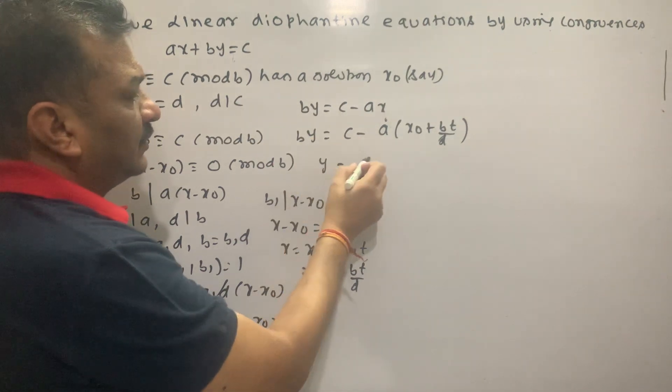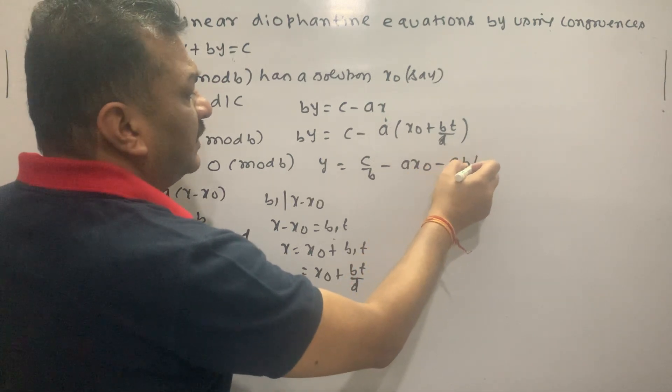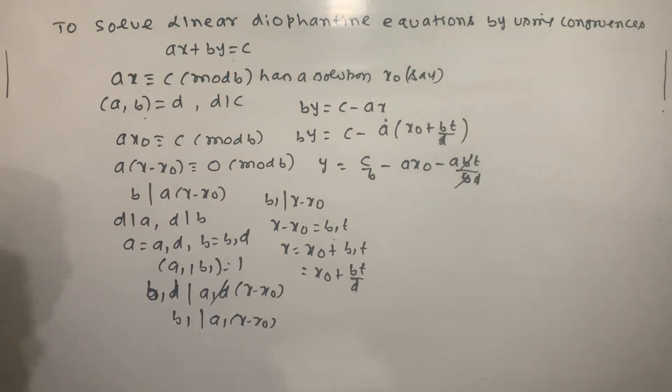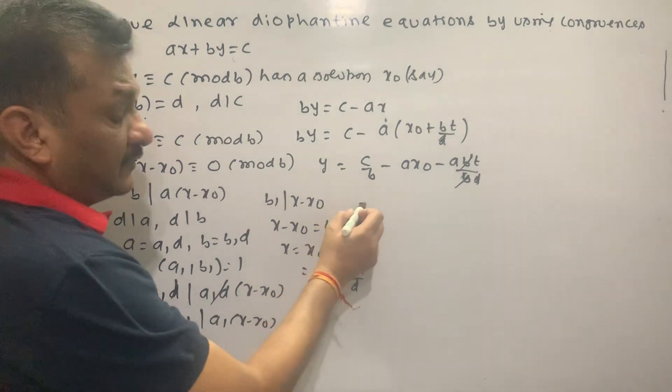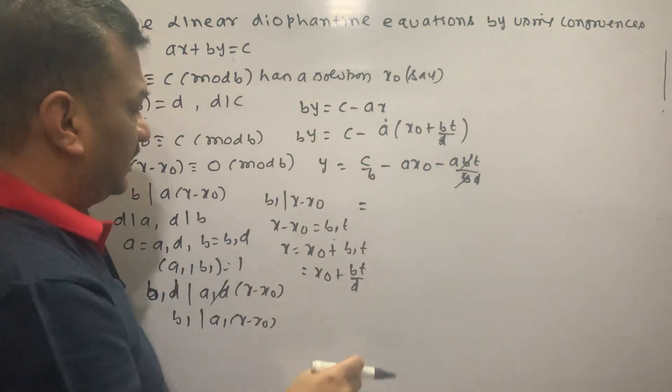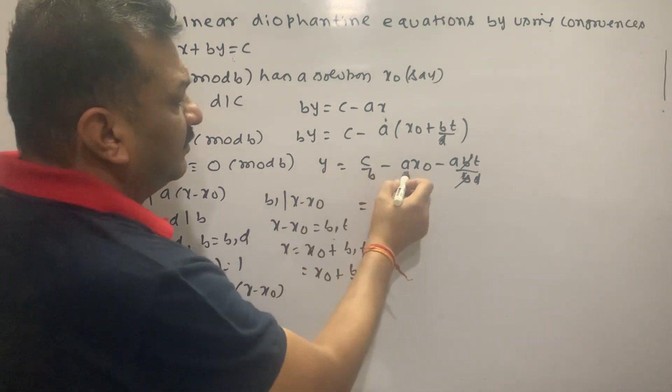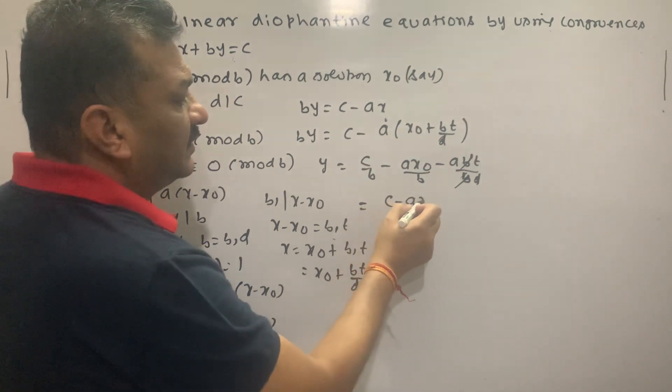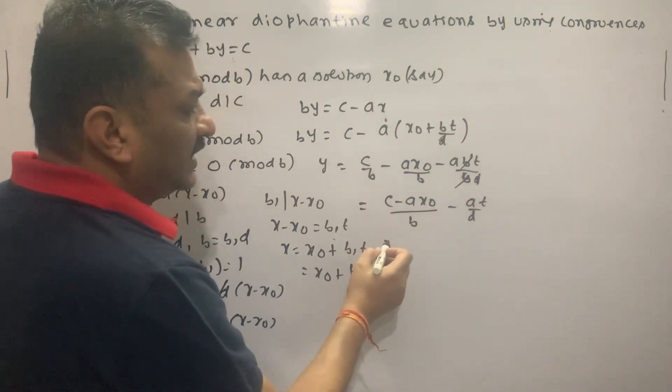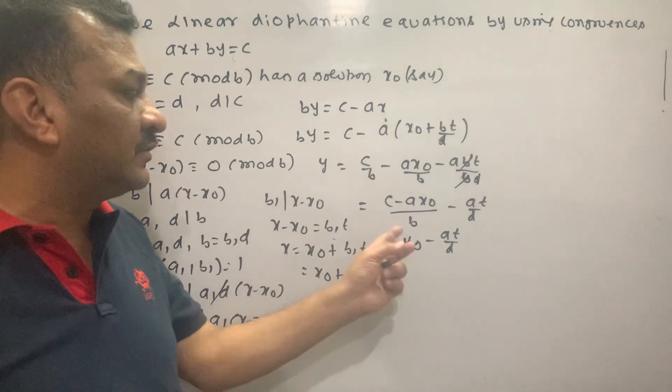Then Y equal to C minus A times X naught plus B times T upon D. Y equal to (C minus A times X naught minus A times B times T) divided by (B times D). B1 equals B divided by D, so Y equals Y naught minus A1 times T. If you put this into the Diophantine equation, you can prove it.